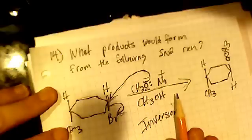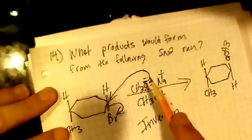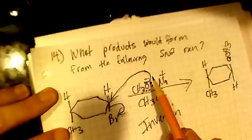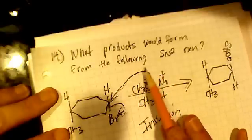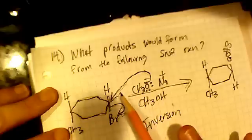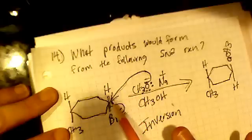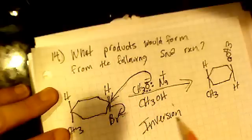So it's an SN2 reaction, there's going to be inversion. The methoxide anion comes in and there's a nucleophilic attack. It attaches here, the bromine leaves, and then there's inversion.